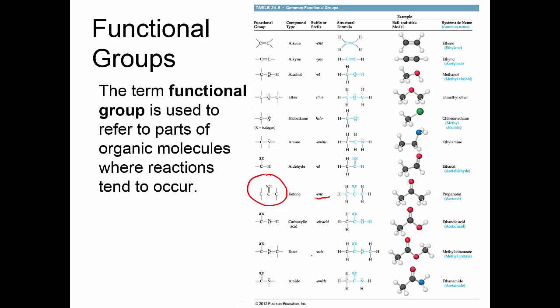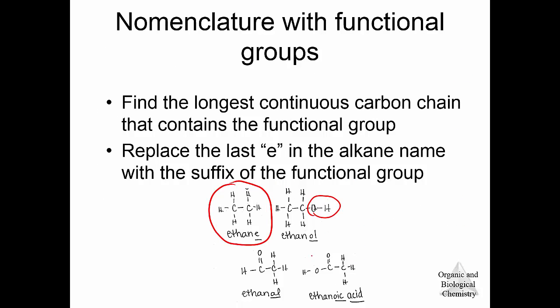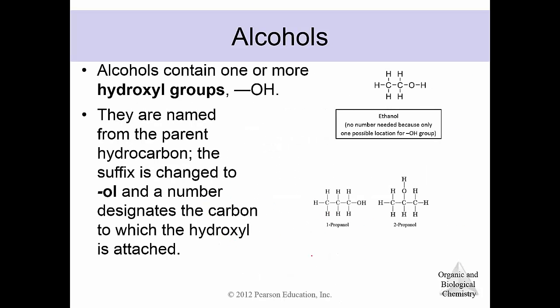You look back to this previous page for what the various endings would be based on your functional group: -ANE, -ENE, -INE, -AL, -AMINE, -AL. You need to know what those various suffixes are and what functional group they go along with. We'll look at some examples and break down the various functional groups.